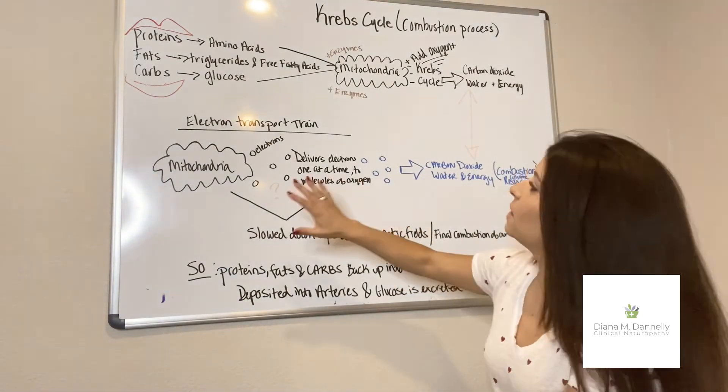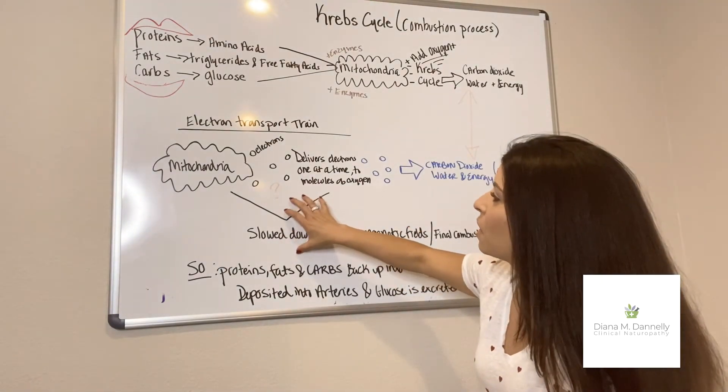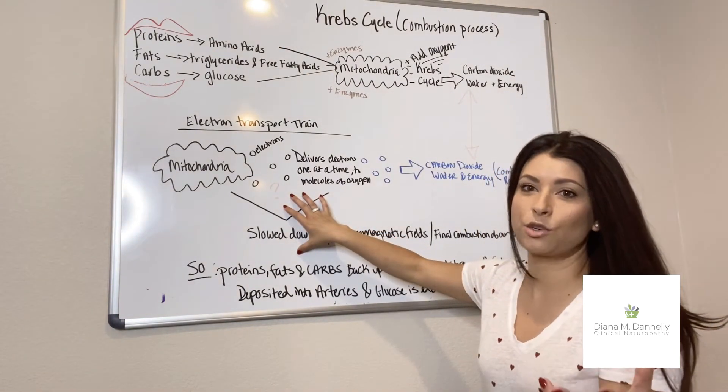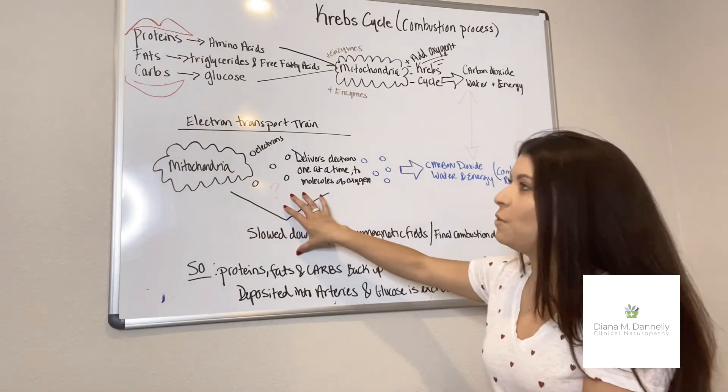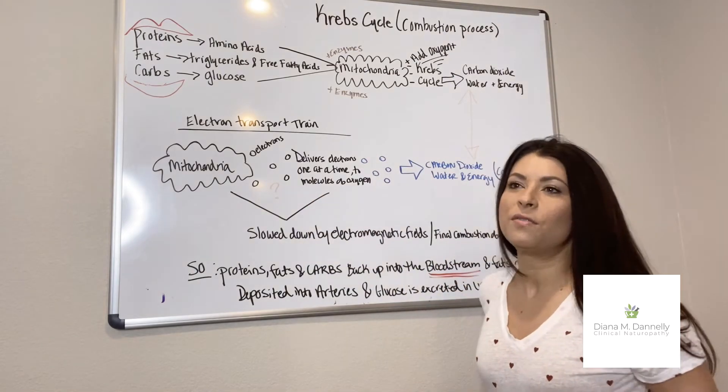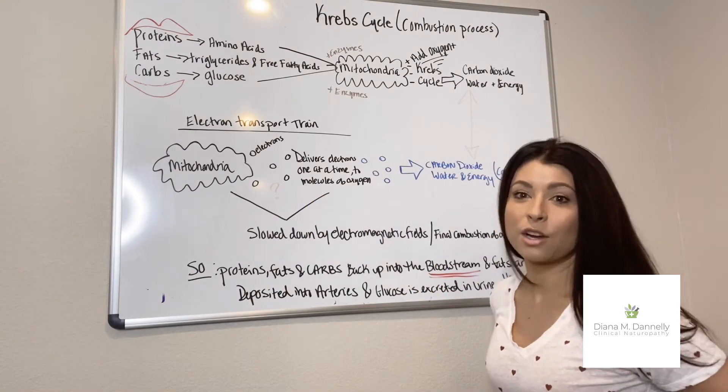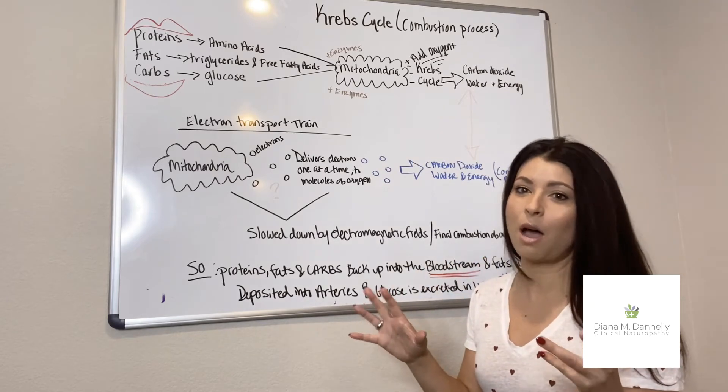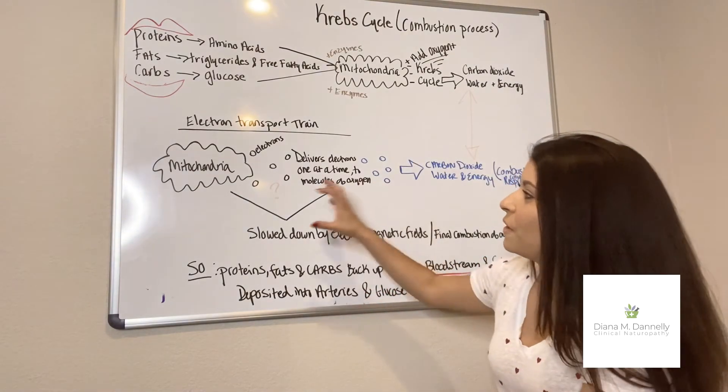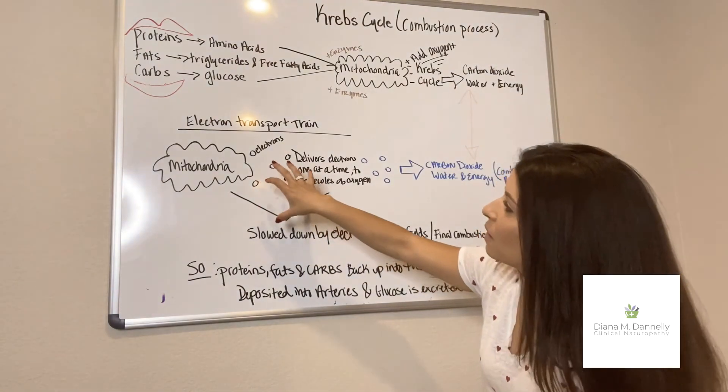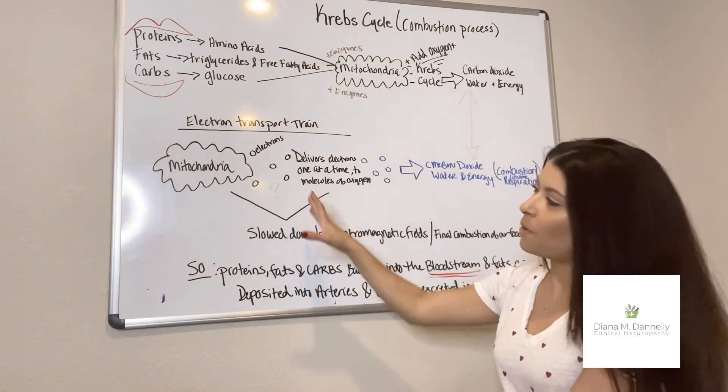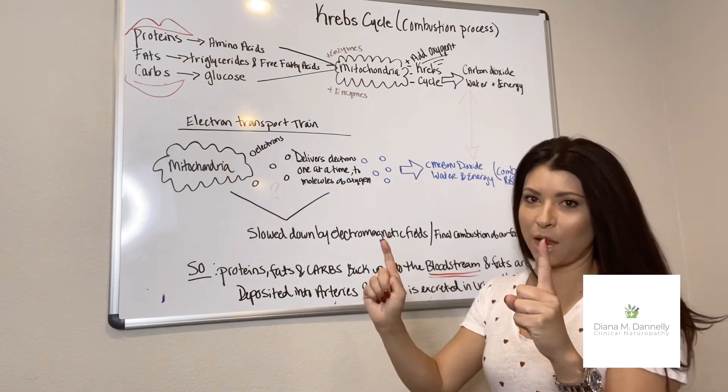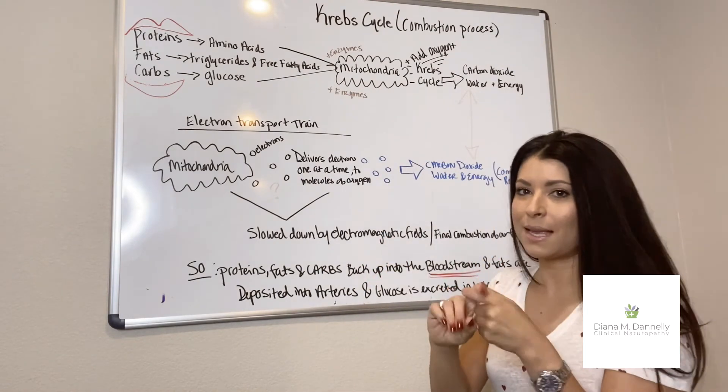So this is the problem right here with electromagnetic fields. An electron is what? It is electric in nature. So when you have an electromagnetic field from cell phone towers to your actual cell phone, Wi-Fi, all the disturbances that happen on Earth, that interferes with your body's process right here on the electron transport train, your body's process to pair that one electron with one molecule of oxygen.